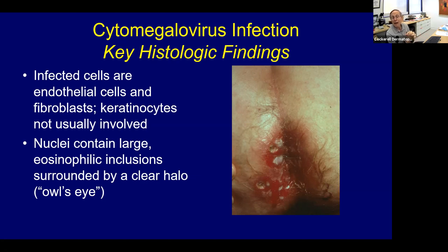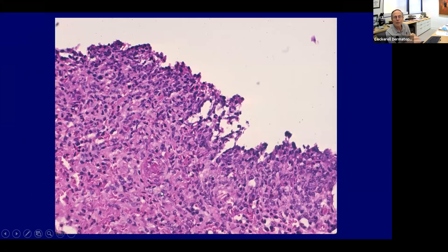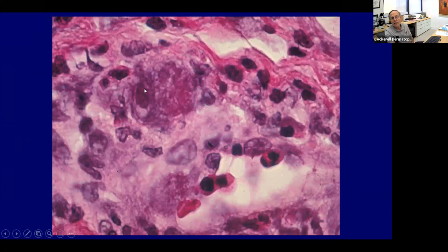Cytomegalovirus — this was actually on my board examination. Here you have an HIV-positive patient with peri-anal ulcers due to CMV. You get large eosinophilic inclusions with a clear halo, giving an owl's eye appearance. These include both cytoplasmic and nuclear inclusions. CMV tends to infect non-epithelial cells — fibroblasts and endothelial cells more commonly — so look inside blood vessels.